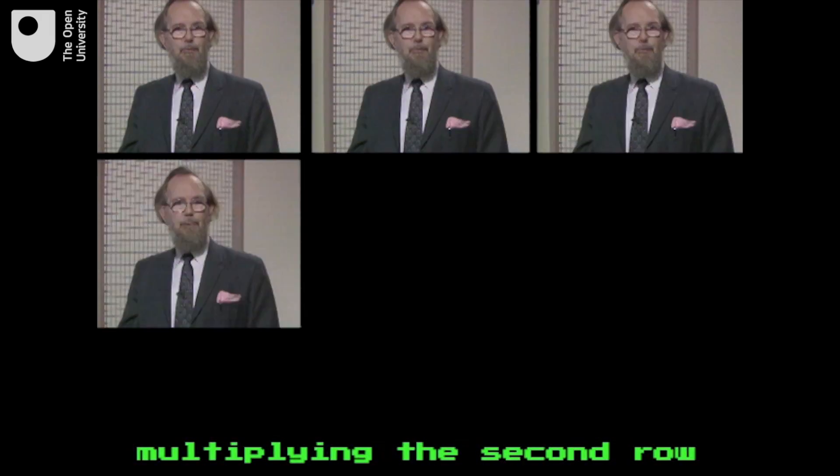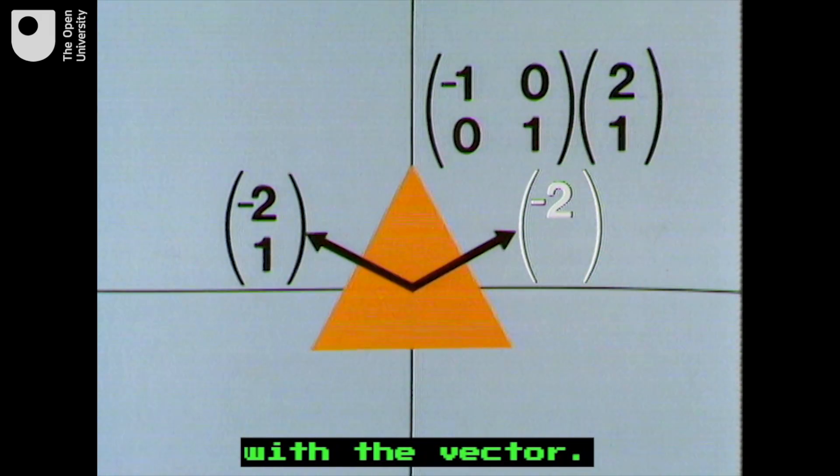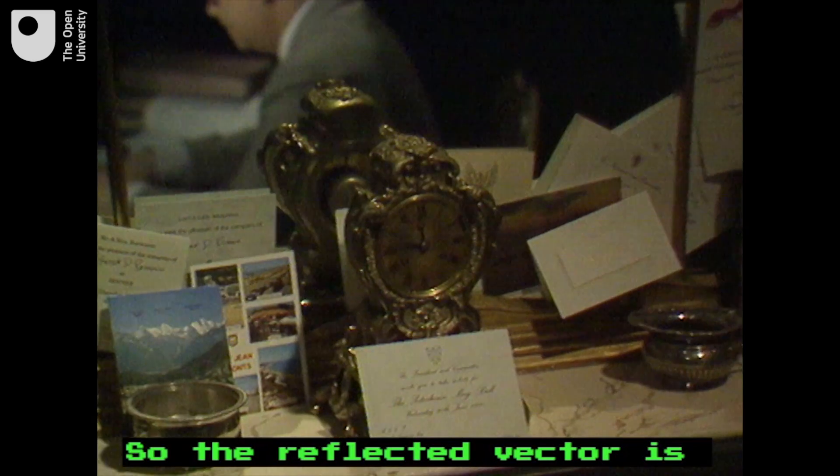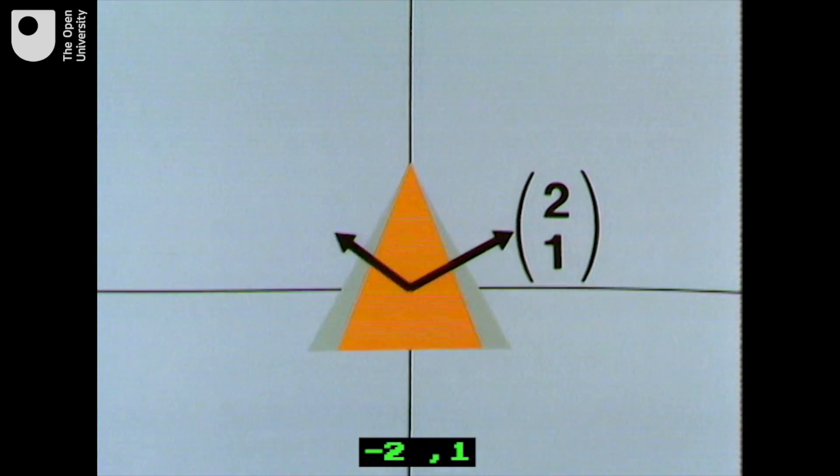The second part is found by multiplying the second row of the matrix with the vector. So 0 times 2 plus 1 times 1, which equals 1. So the reflected vector is (minus 2, 1).